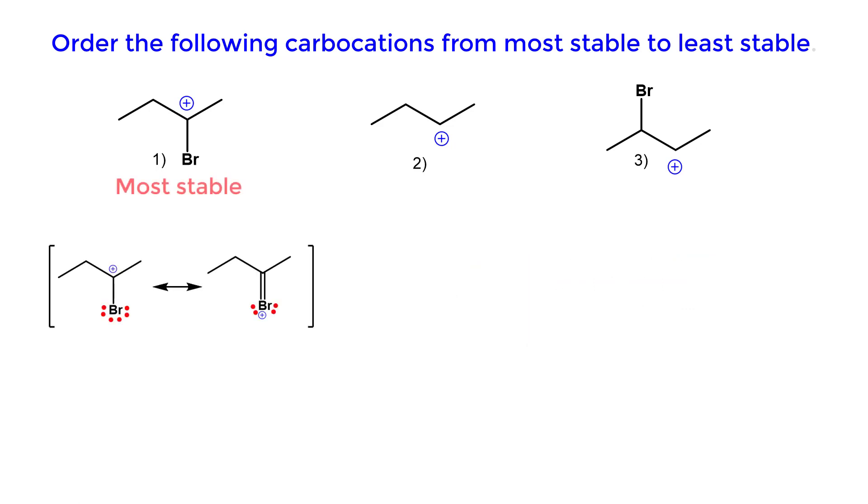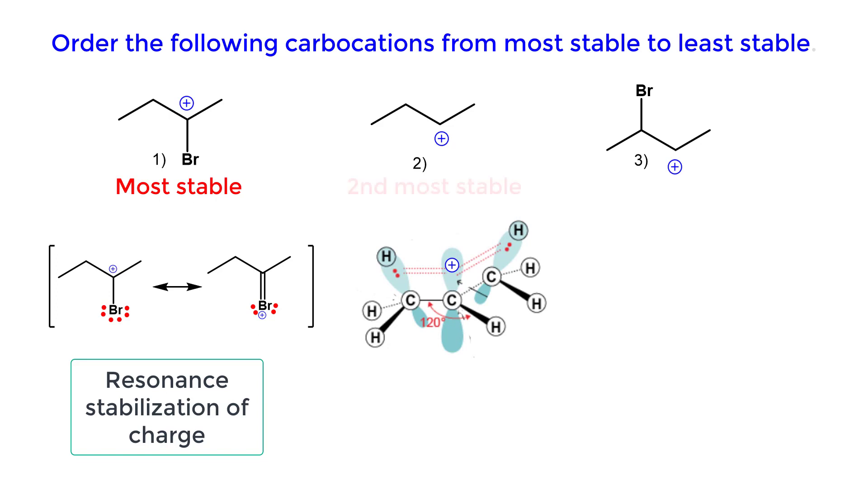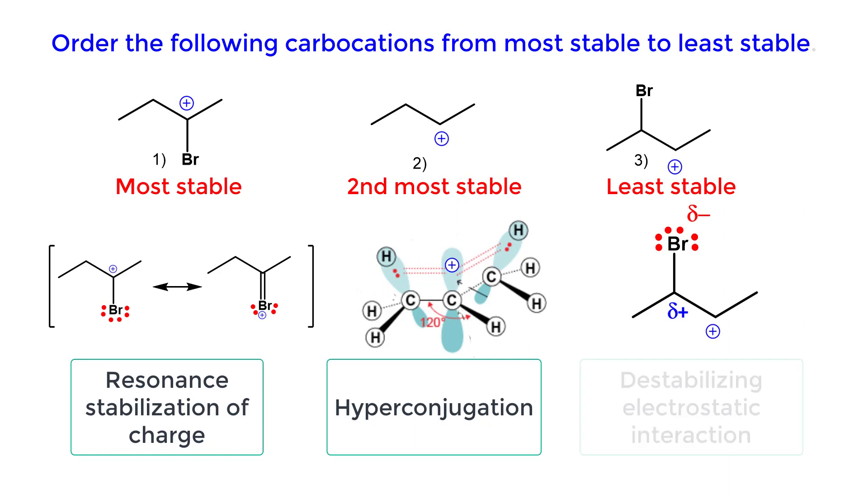The most stable carbocation is structure one because the charge is delocalized through resonance, followed by the secondary carbocation, structure two. The least stable carbocation is structure three because of the destabilizing effect of the adjacent partial positive charge next to the carbocation.